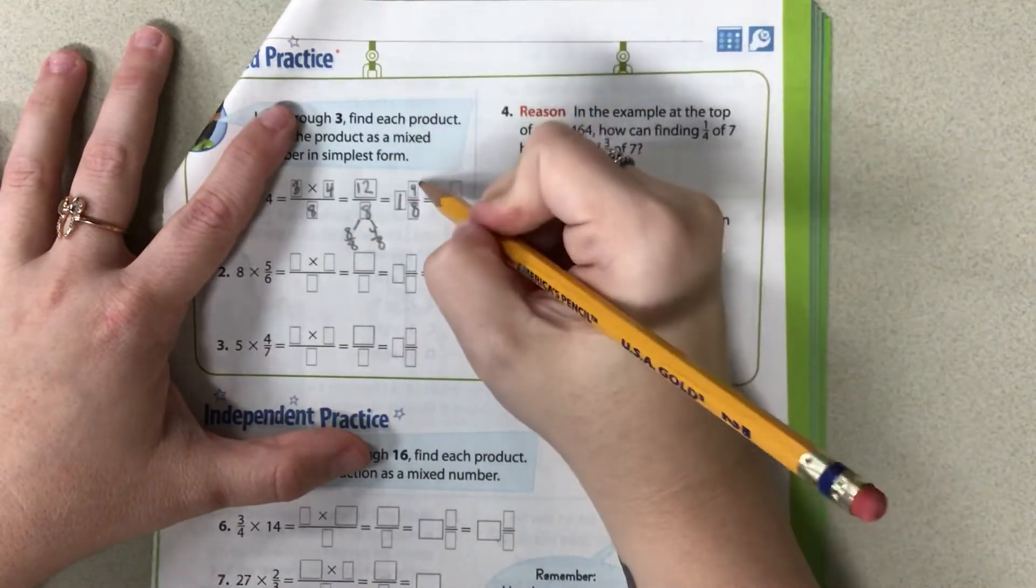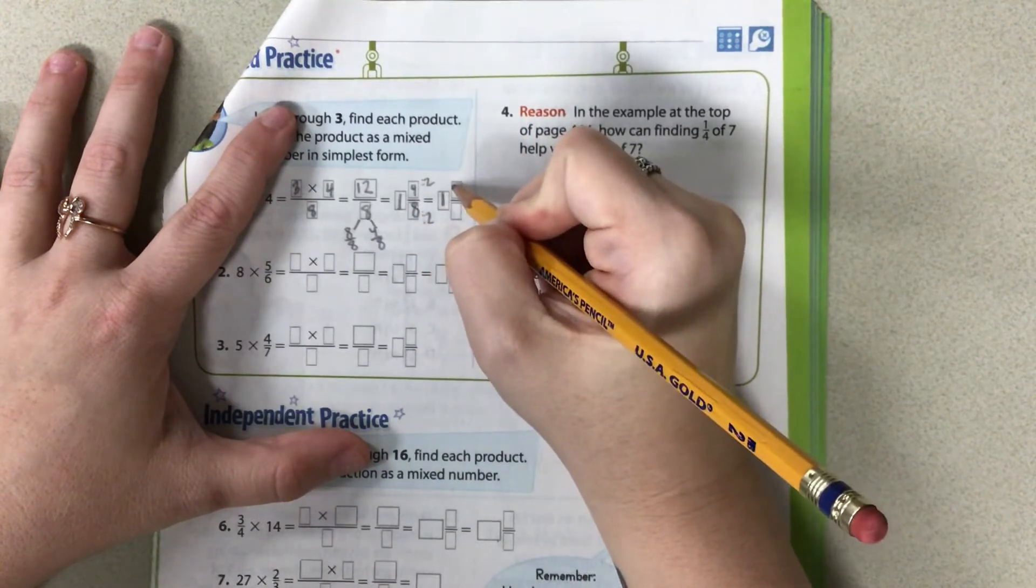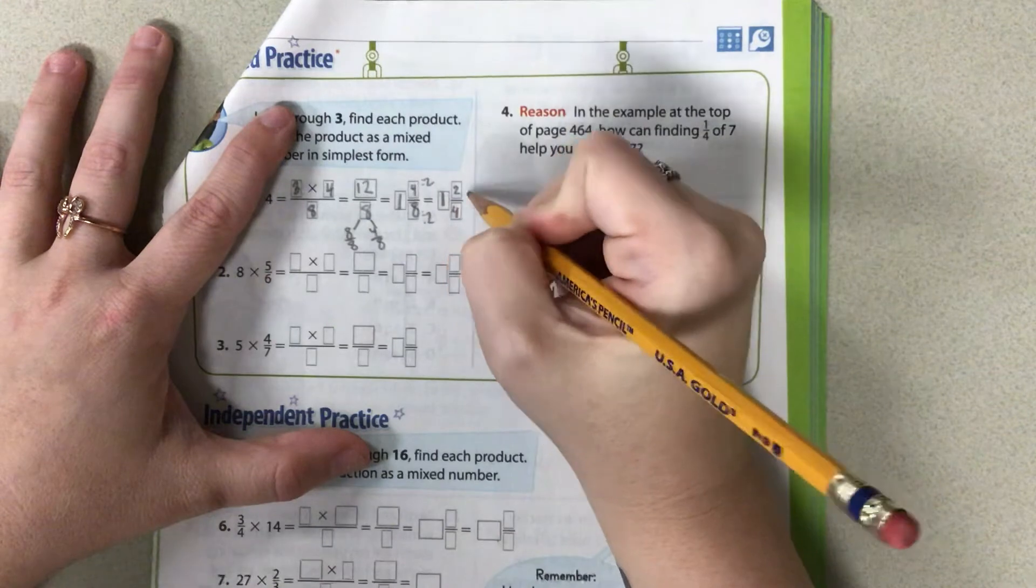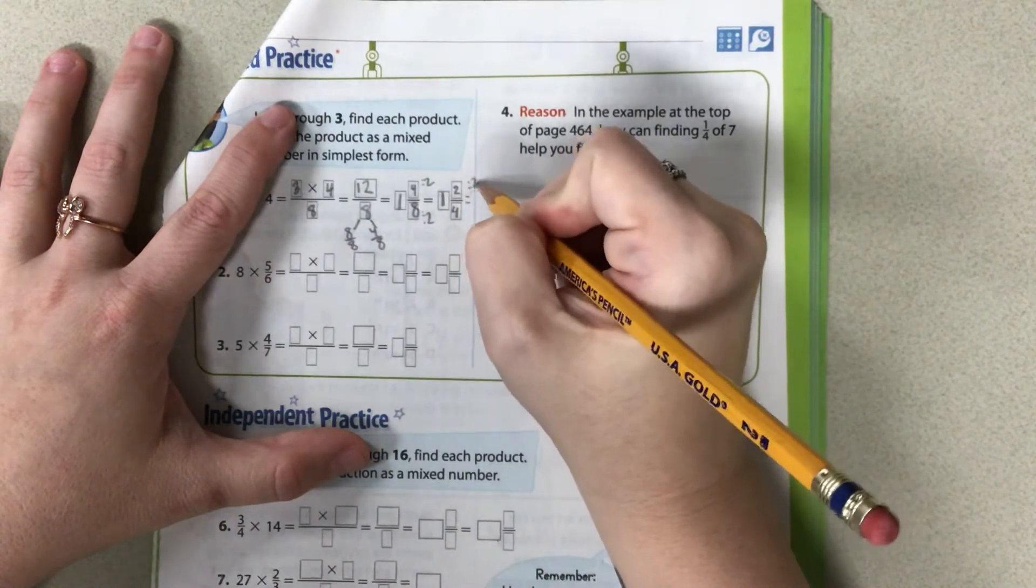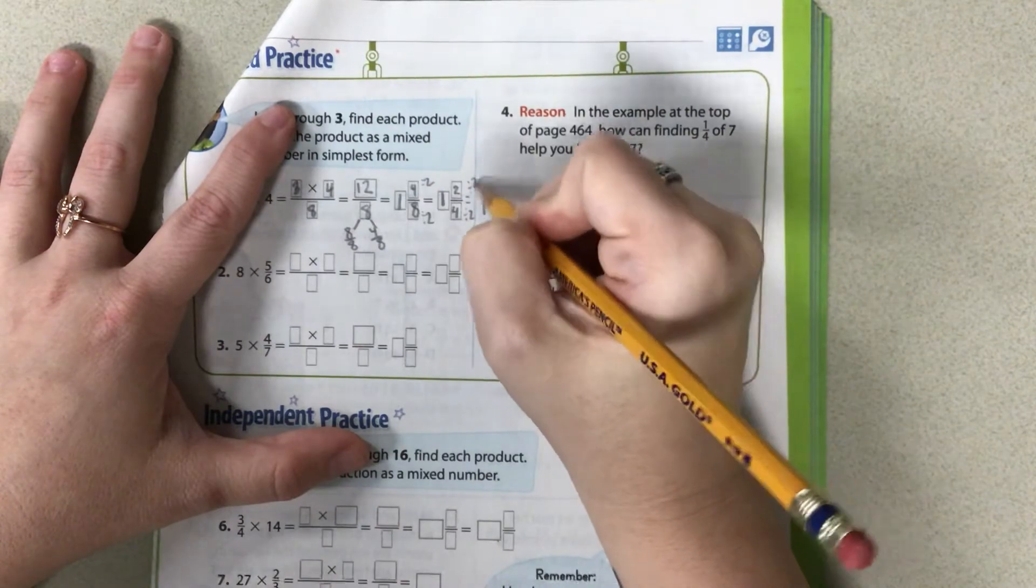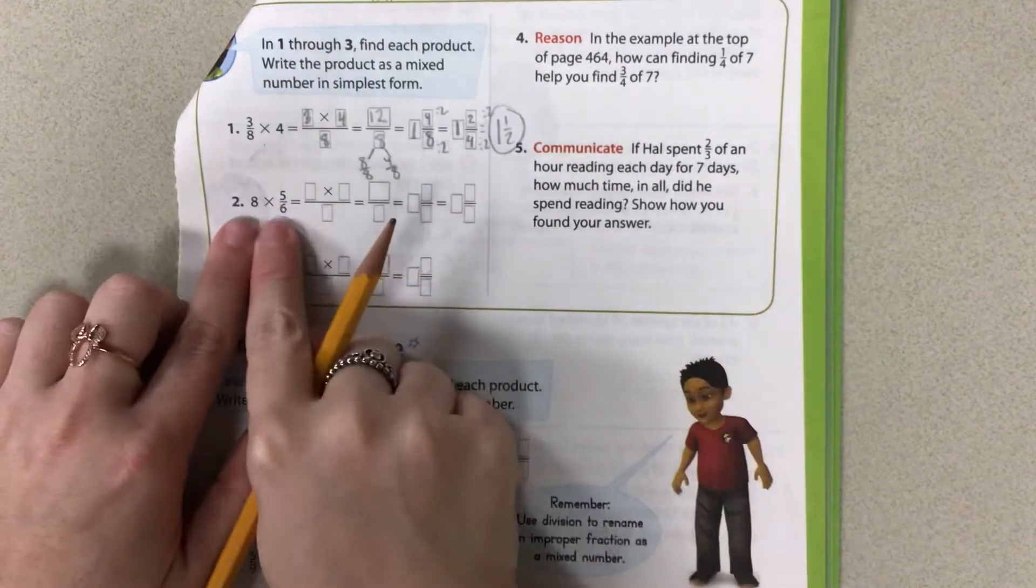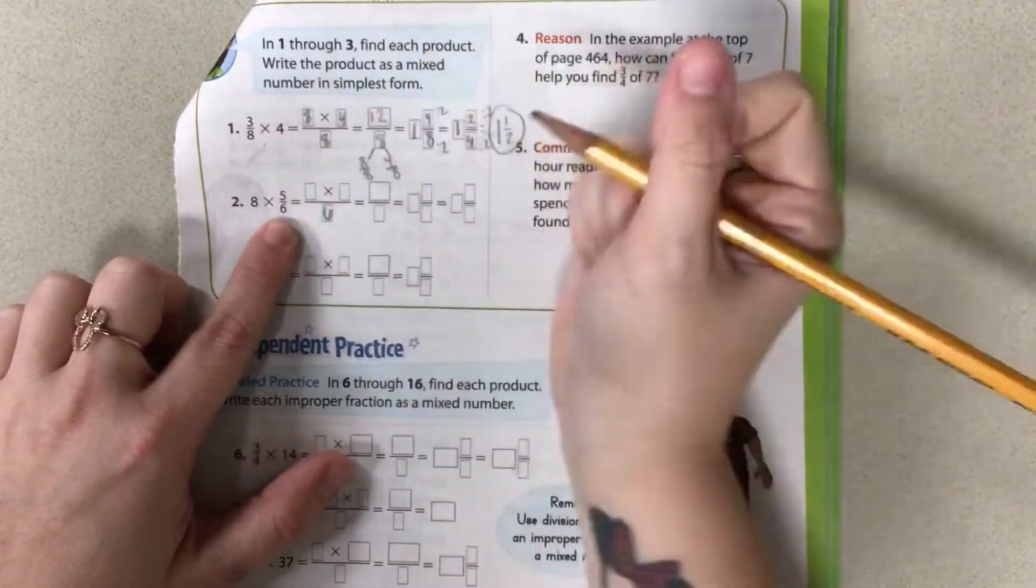And if you simplify both of those by dividing by 2, that gives you 1 and 2 fourths. Really, then you can divide by 2 again. And that gives you 1 and 1 half as your answer. Okay. It's just pulling it across. Keep our denominator the same.